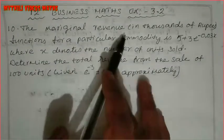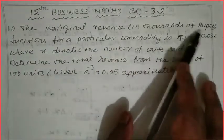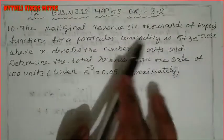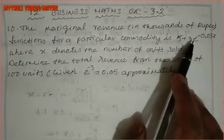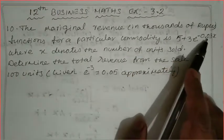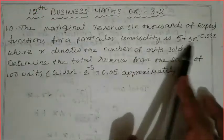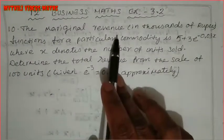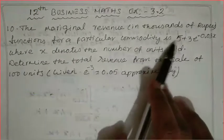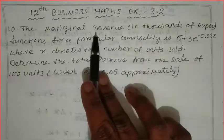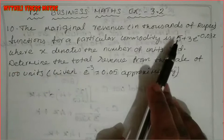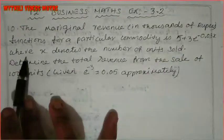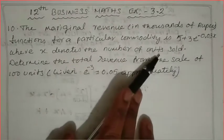The 10th sum is about marginal revenue in thousands of rupees. The function for a particular commodity is 5 plus 3 e power minus 0.03x. So this is marginal revenue. Revenue is R, so marginal revenue is R dash of x, where x denotes the number of units.